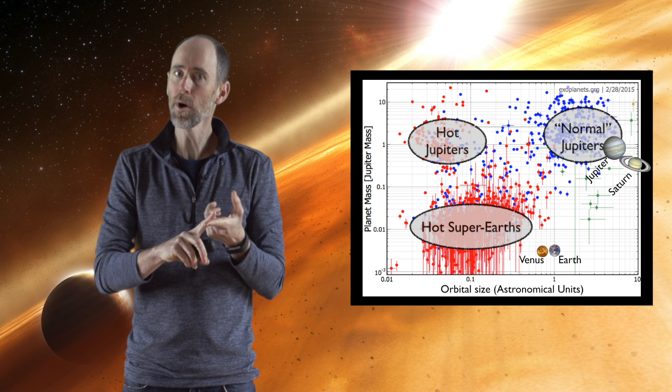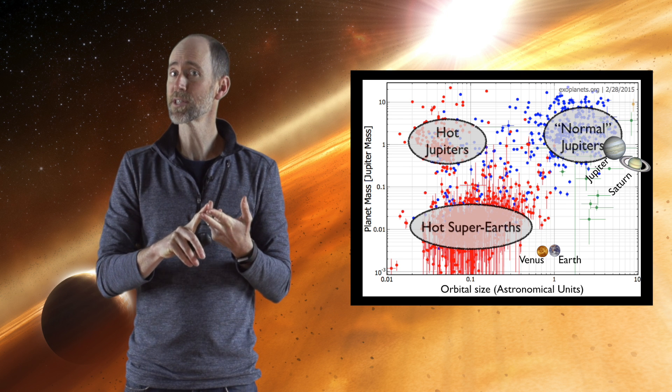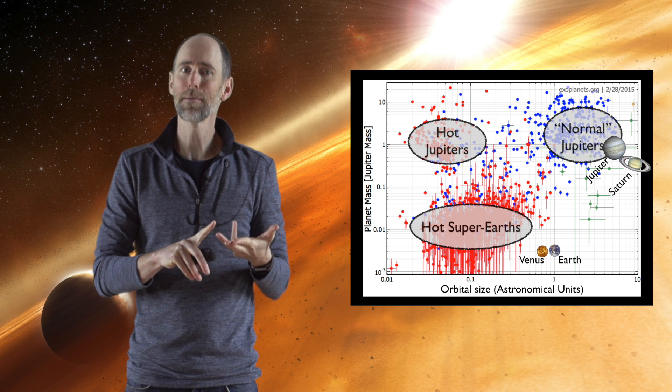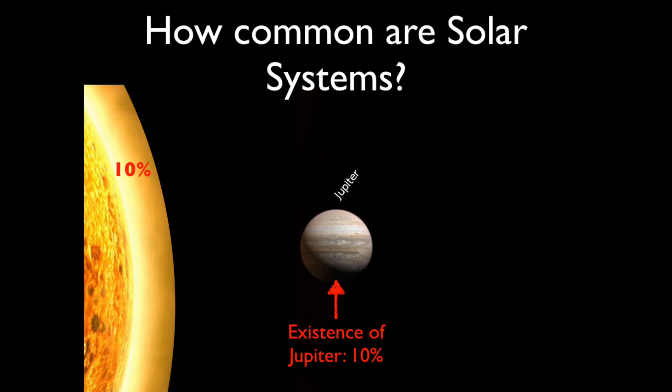And so from these different clumps, about 1% of stars like the Sun have a hot Jupiter, about 10% have a normal Jupiter, and about 50% have a hot super-Earth. What does that mean? It means the probability of us having a Jupiter is about a 1 in 10 shot, about a 10% shot.